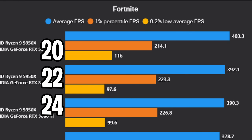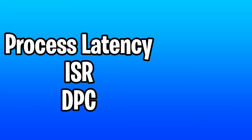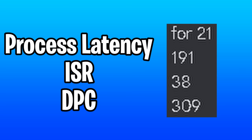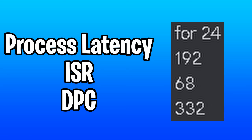For FPS, a value of 20 worked best for me, which includes the best 0.2% lows. Next, I'd recommend trying 24. And then for third place, we have 22. When it comes down to LatencyMon, 42 had the best all-around latency. But 21 was about the same as 42, but had better ISR latency. And then lastly, we have third place with 24.